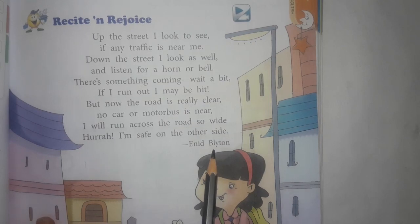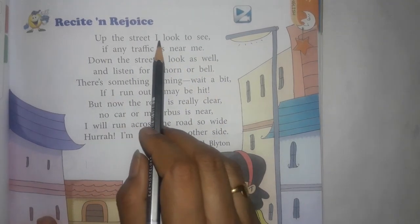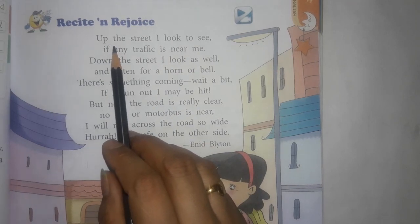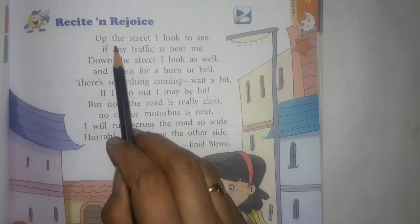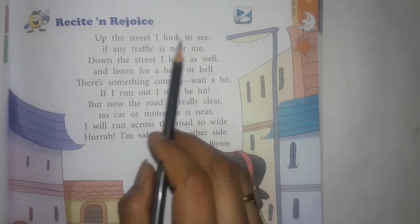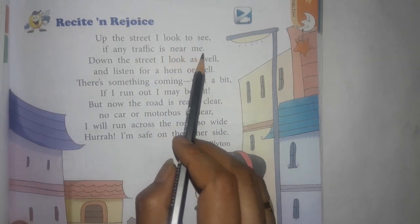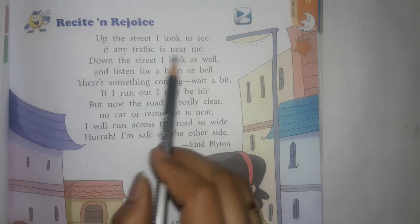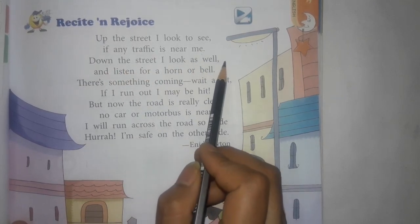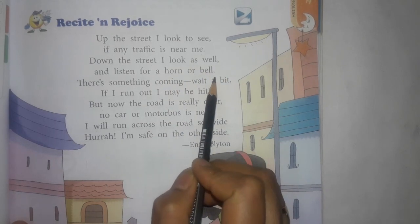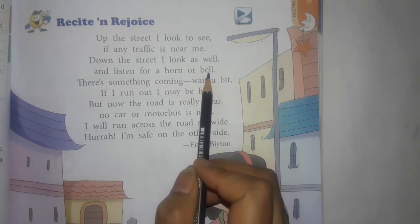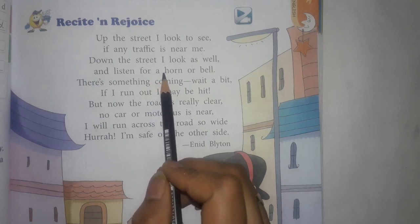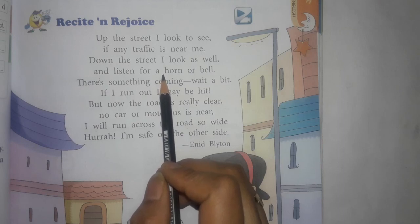Now let's explain the poem. Up the street, I look to see if any traffic is near me. When I cross the street, I am standing on the footpath, I look to see that there is no traffic ahead. Down the street I look as well and listen for a horn or bell. If I listen to any horn or bell, I will stop.